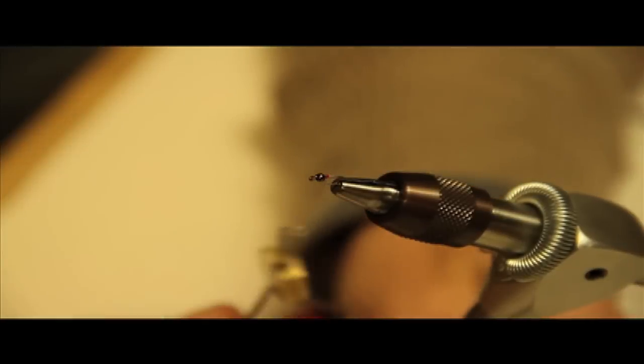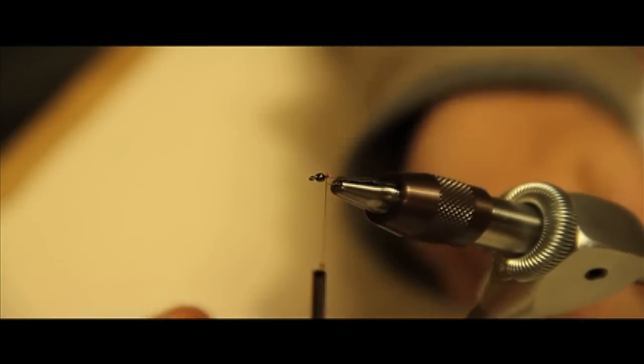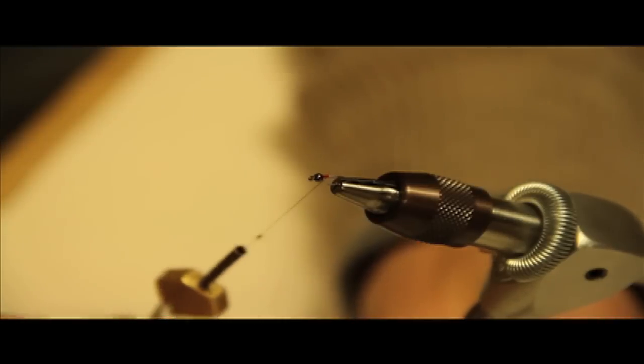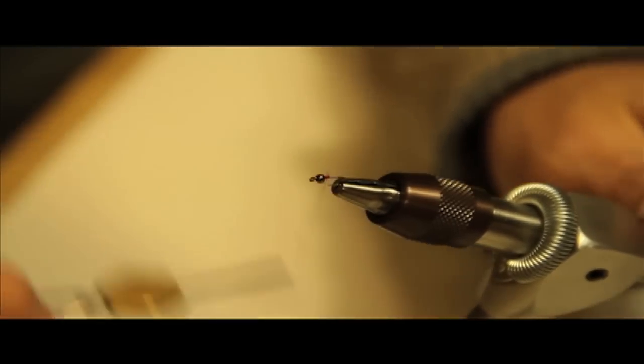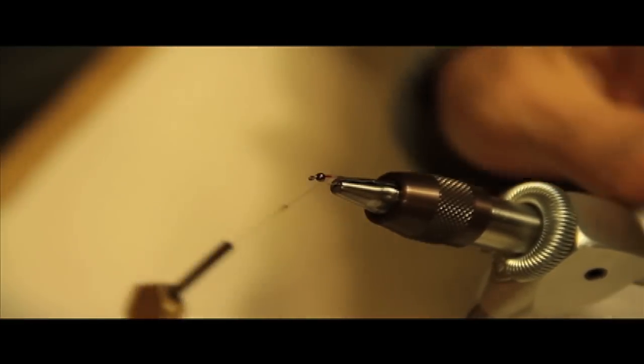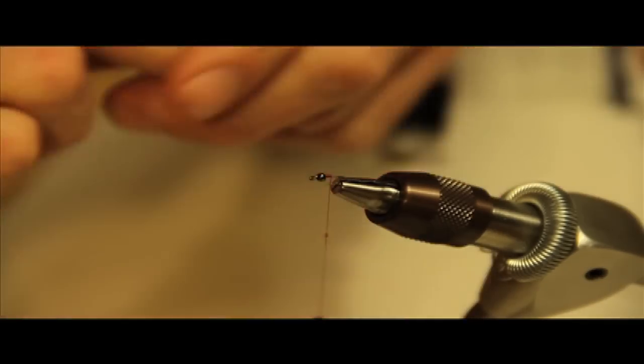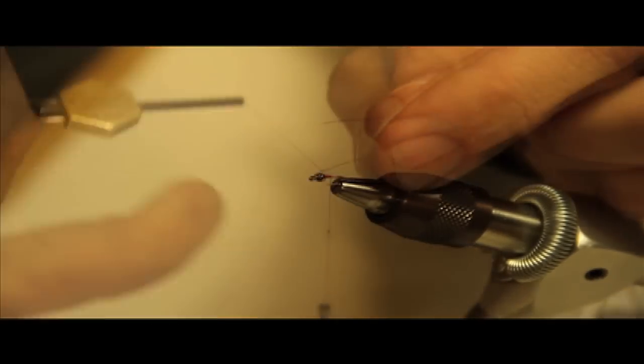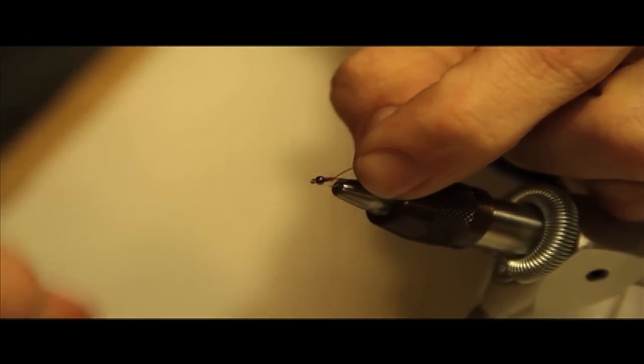This is just a very simple Zebra Midge. We've put the two millimeter bead on a size 20 hook. I'm going to take some black wire, which I've put on a bobbin. This is some small wire, if I recall correctly.